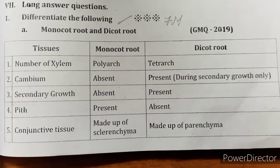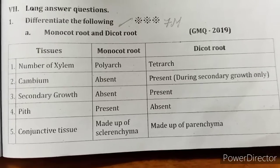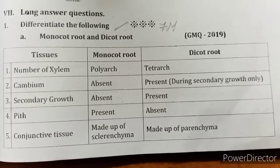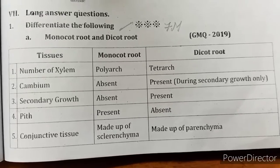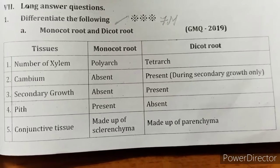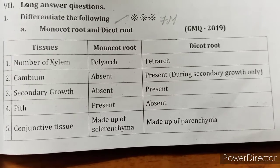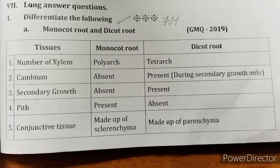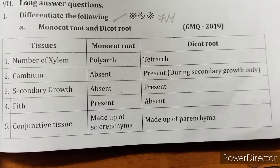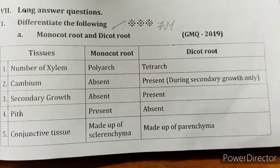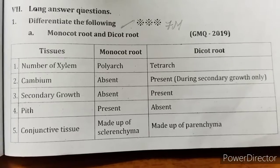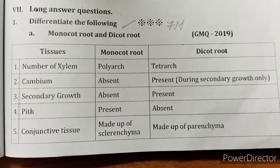Long answer question: Differentiate monocot root and dicot root. Number of xylem: polyarch in monocot, tetrarch in dicot. Cambium: absent in monocot, present in dicot. Secondary growth: absent in monocot, present in dicot. Pith: present in monocot, absent in dicot. Conjunctive tissue: made up of sclerenchyma in monocot, made up of parenchyma in dicot.